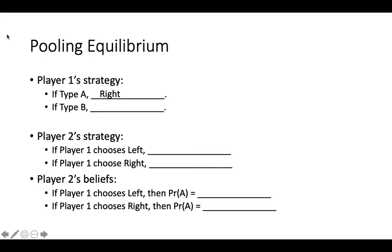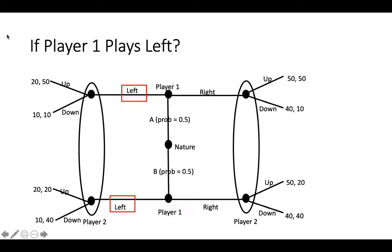In this pooling equilibrium: if player 1 is type A, they should play right, and if player 1 is type B, they should also play right. If player 1 chooses right, then player 2 should choose up, and should believe that player 1 is equally likely to be type A as type B. But what should player 2 do if player 1 plays left, and what should player 2 believe? Playing left is a strange and unexpected thing for player 1 to do, given that it is a dominated strategy for both types of player 1. However, player 2 needs to have a plan in the unlikely event that player 1 does something unexpected.